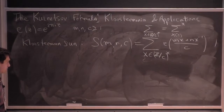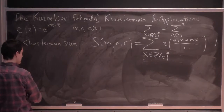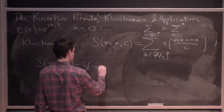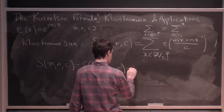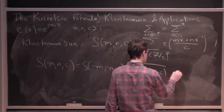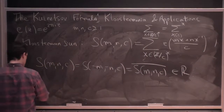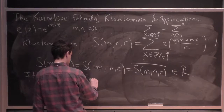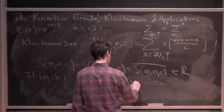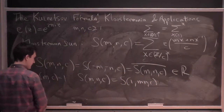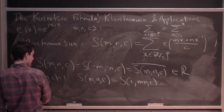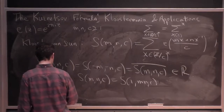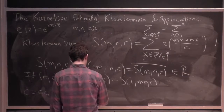That's the Kloosterman sum, and these have various elementary properties. For example, S(M, N, C) equals S(-M, -N, C), which equals the complex conjugate of S(M, N, C) — so the whole thing is always a real number. Also, if M and C are relatively prime, you can slide the M to the next entry.